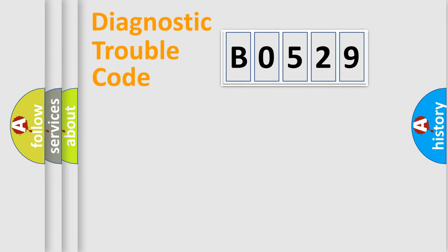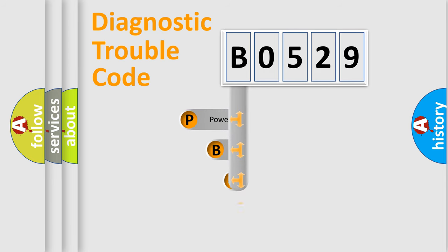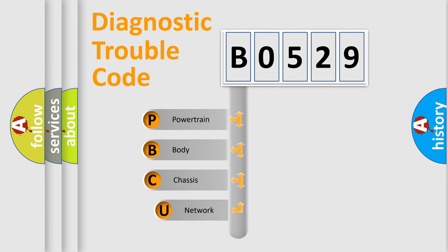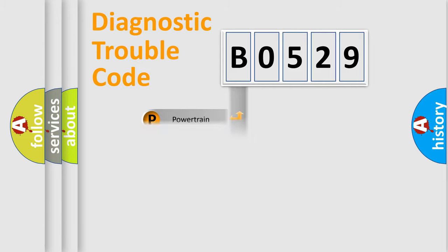First, let's look at the history of diagnostic fault code composition according to the OBD2 protocol, which is unified for all automakers since 2000. We divide the electric system of the automobile into four basic units: Powertrain, Body, Chassis, and Network. This distribution is defined in the first character of the code.